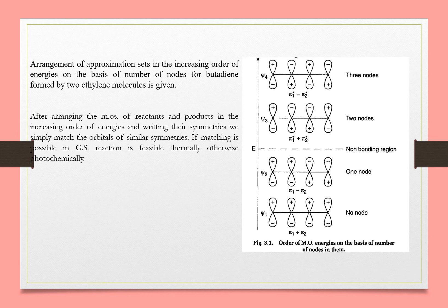The arrangement of molecular orbitals in increasing order of energy: Psi1 has all positive lobes in the upper lobe, so no nodes. Psi2 has two positive upper and two negative in the upper lobe, so one node.